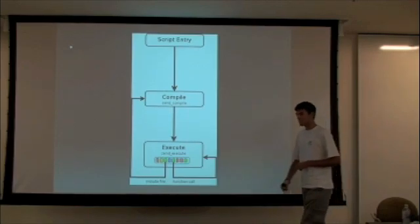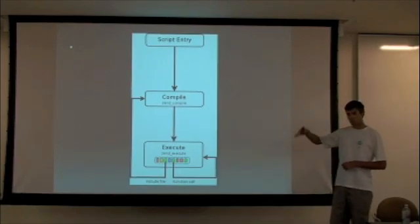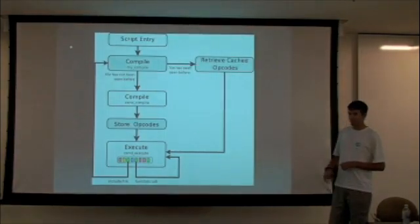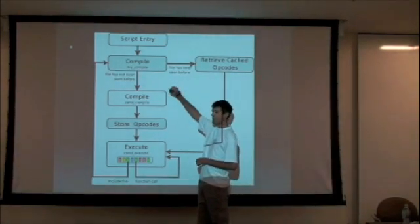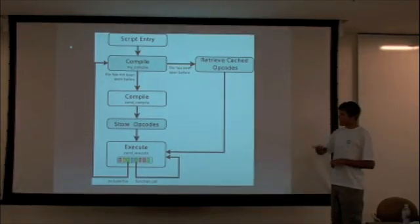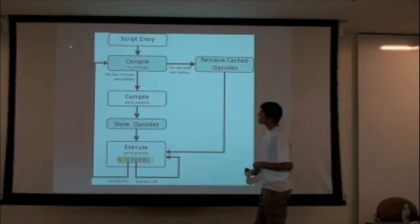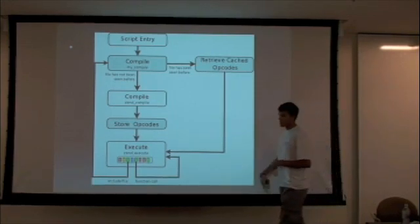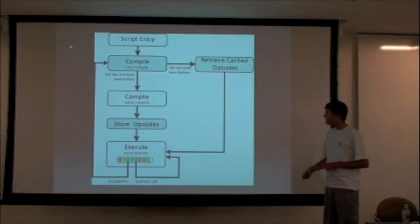The interesting thing is that these execute and compile functions are actually hooks. So you can replace them with your own functions, which is what bytecode caches do. So what they do is that they replace the compile function, and then when they are asked to compile a file, they check the cache to see if the file has already been compiled before. If not, it just compiles normally.